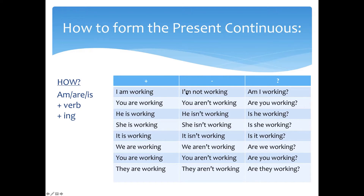So, to be: I am not working, you are not working. Here is just a contraction of 'are not': he isn't working, she isn't working, it isn't working, we aren't working, you aren't working, they aren't working. How about the question form? Am I working? We just reverse the to be and the subject of the sentence.